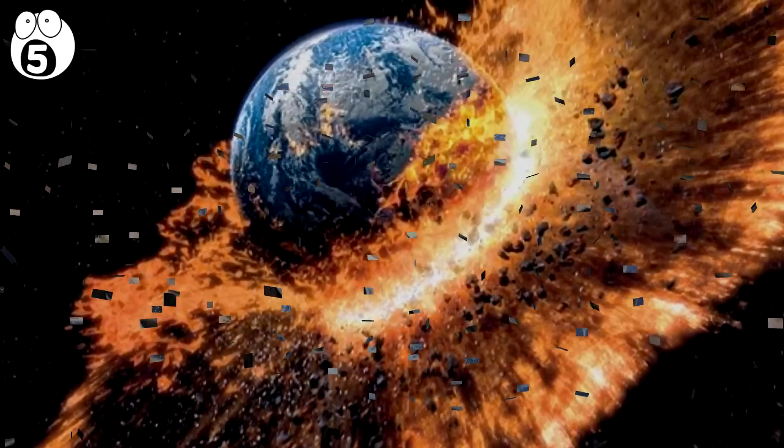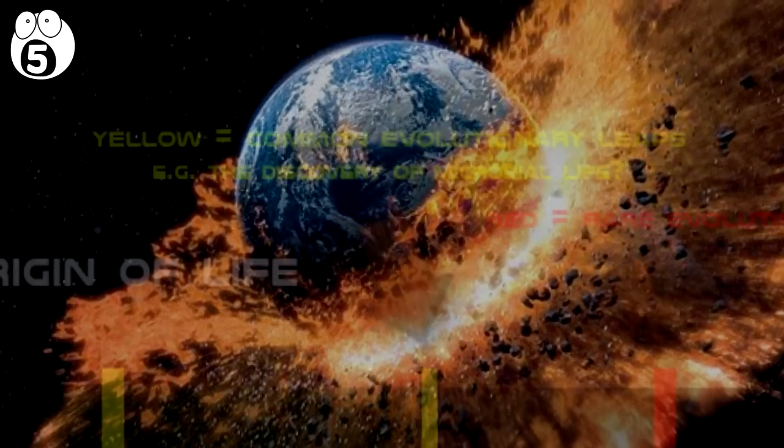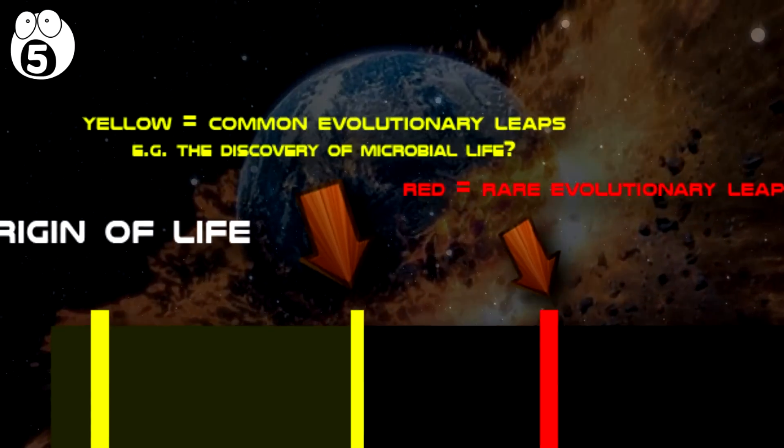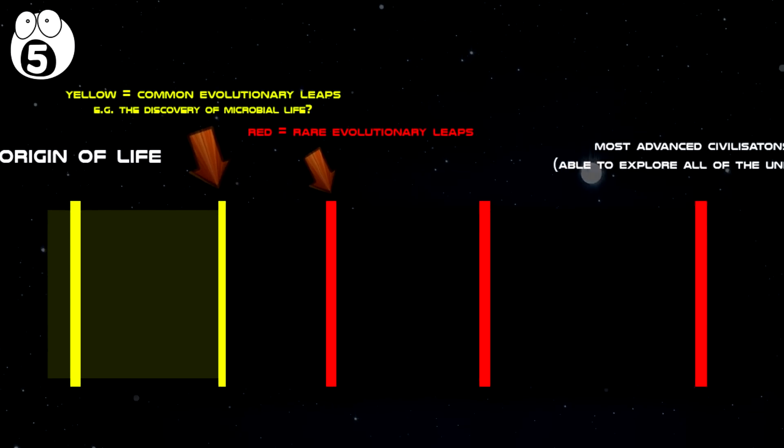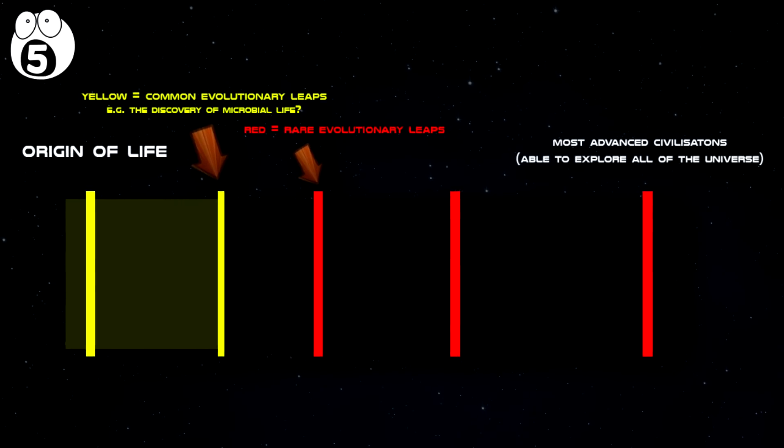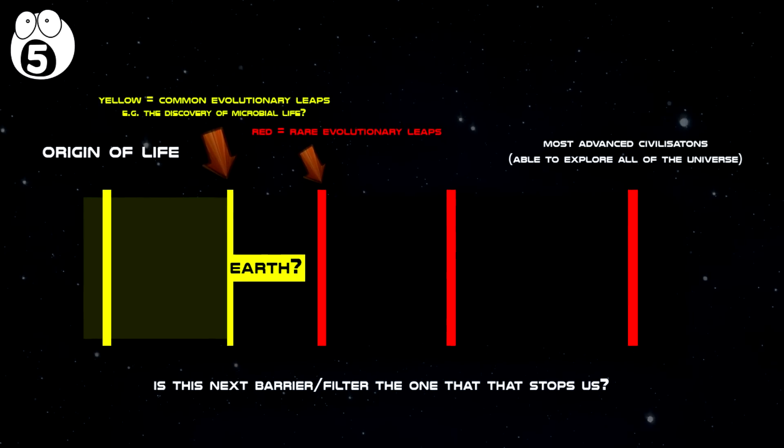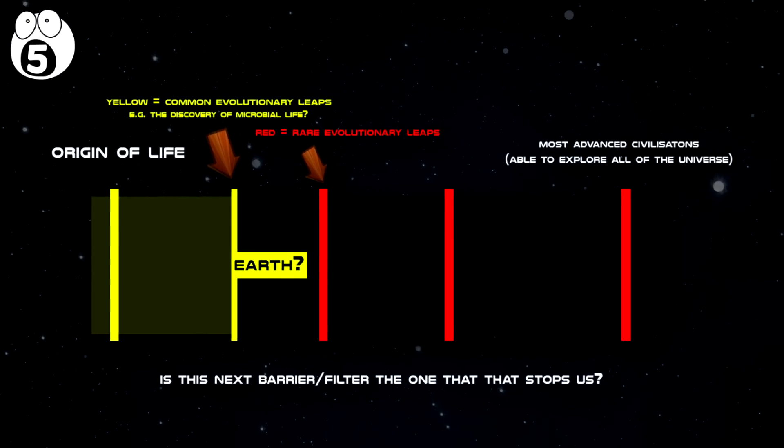One such theory states that there exists a great barrier that prevents a species from evolving past it. Now this would make the discovery of microbial life, for example, a scary thought, since it would mean that the great barrier of evolution is not at that point, but rather at some other stage. This would mean that the great barrier that stops a civilization in its tracks is ahead of us and we might not survive.